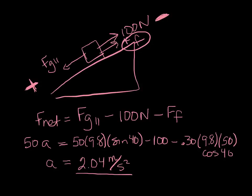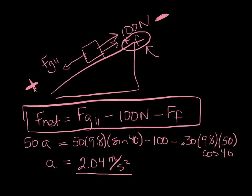Why did we have to redo this? Because we had friction pointed in the wrong direction, and that does affect your math. If you end up with friction pointing in the wrong direction when you do your problem, you need to reset your net force equation. It's all about which direction your net forces are going — pay attention to that. The net force equation itself is what's most important; everything else is just plugging expressions in. That's enough for now — I'm sure your brain is full, so good luck!